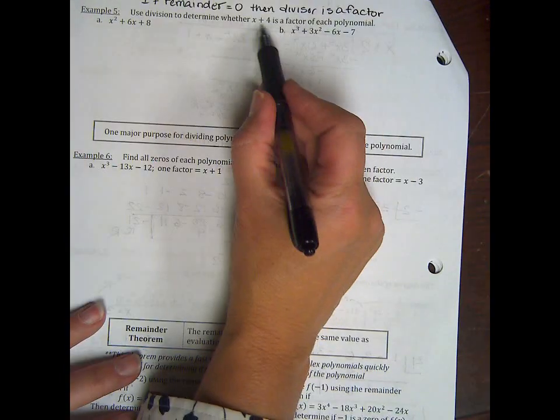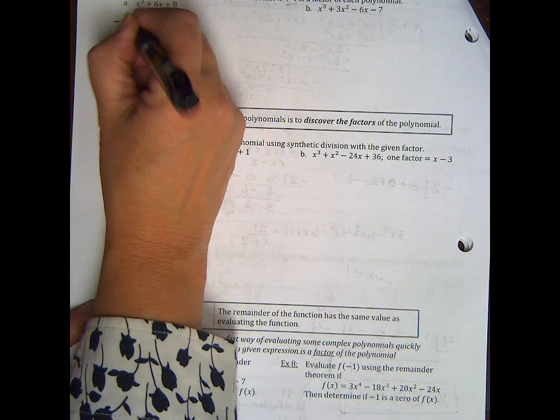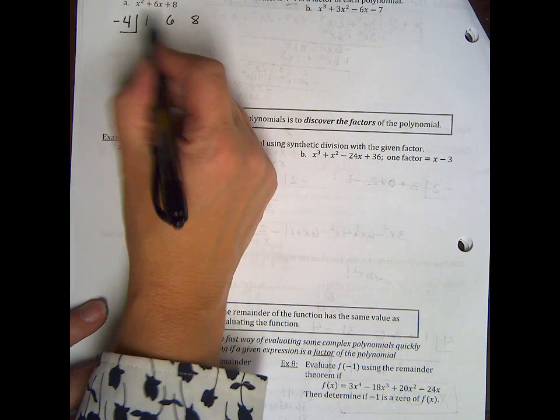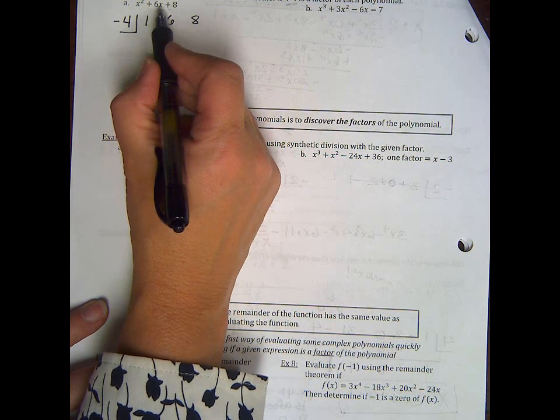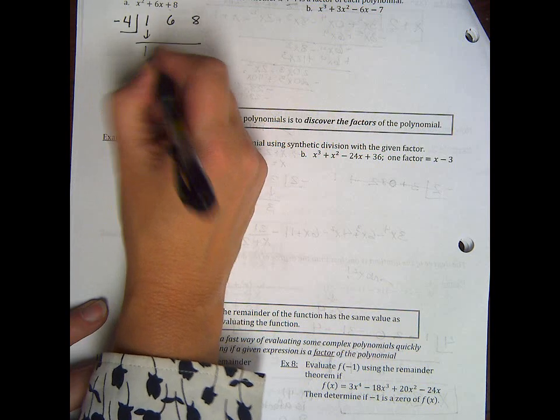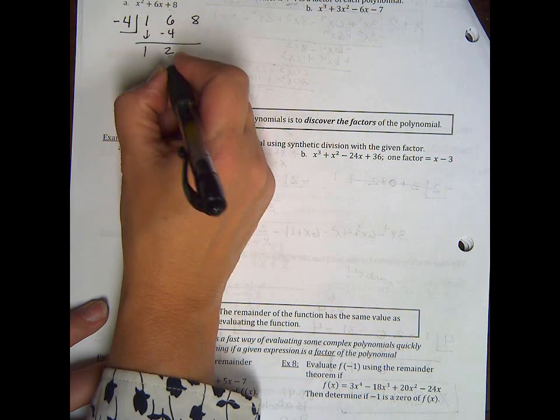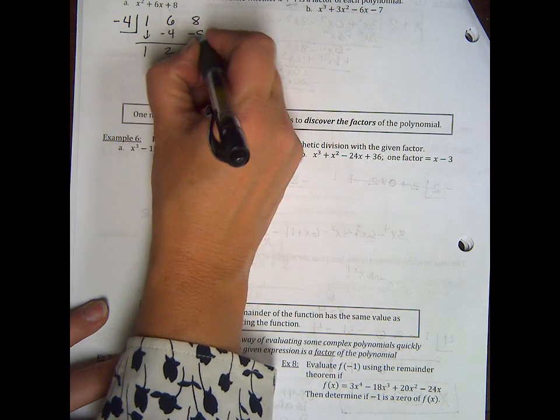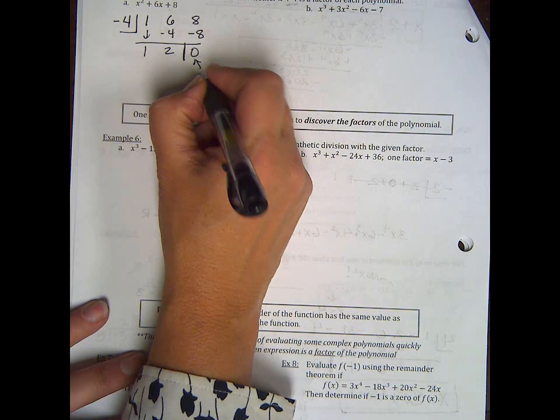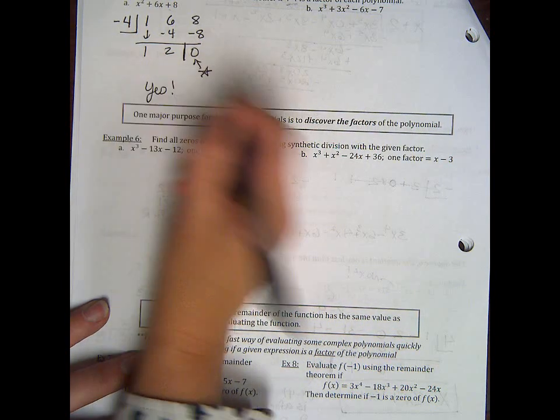So we're going to synthetically divide by negative 4. Remember to always change the sign of what you're dividing by. So we have negative 4 into coefficients are 1, 6, and 8. Didn't skip any terms. Okay, we drop the first one, we get 1. Negative 4 times 1 is negative 4. Combine those two, I get 2. Negative 4 times 2 is negative 8, and my remainder is 0. That means that yes, x plus 4 is a factor.